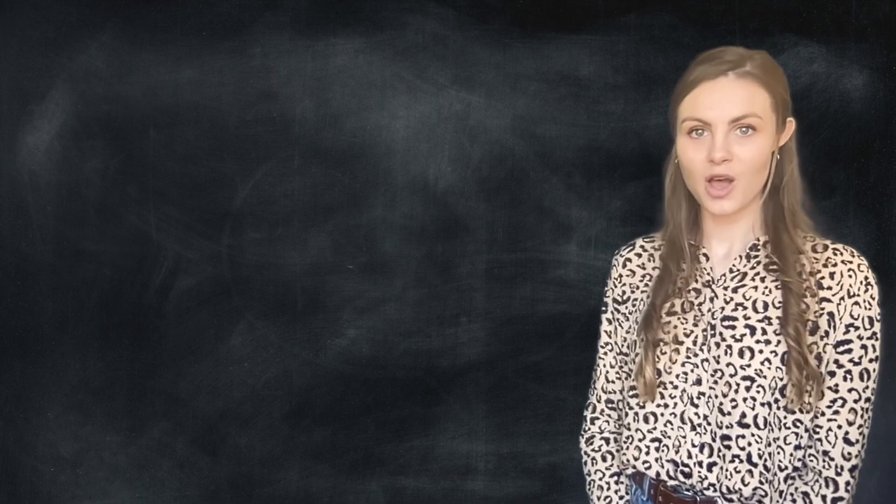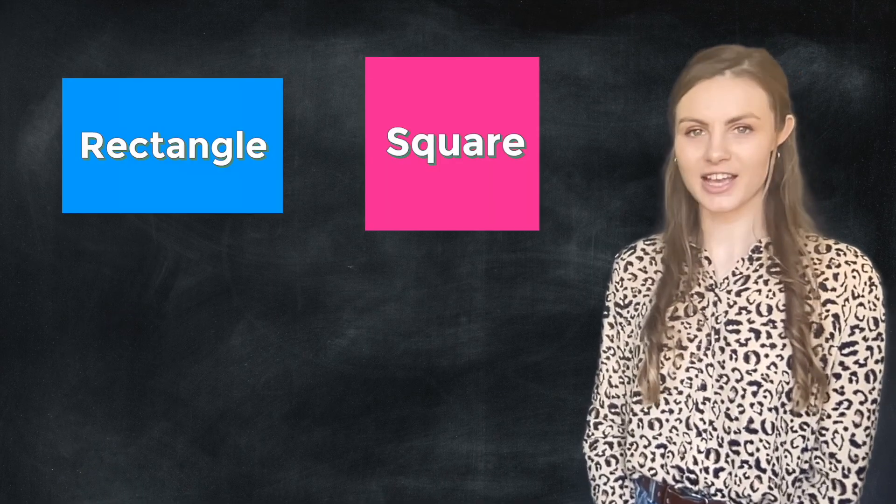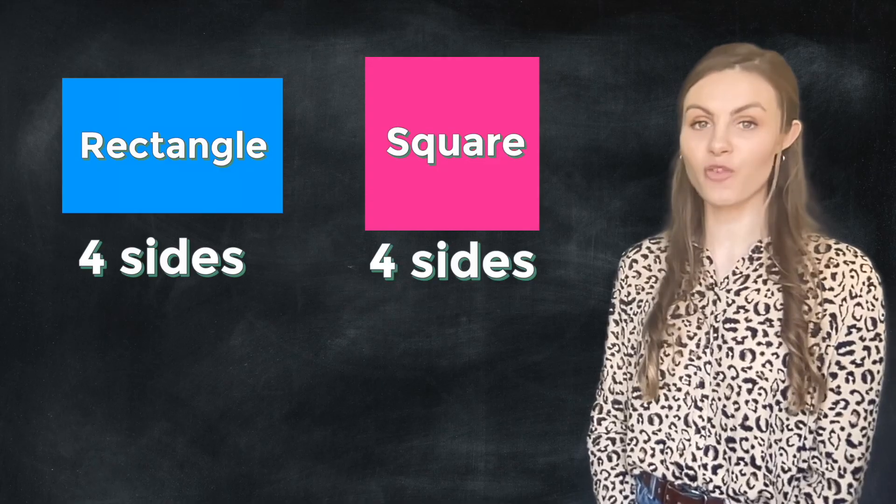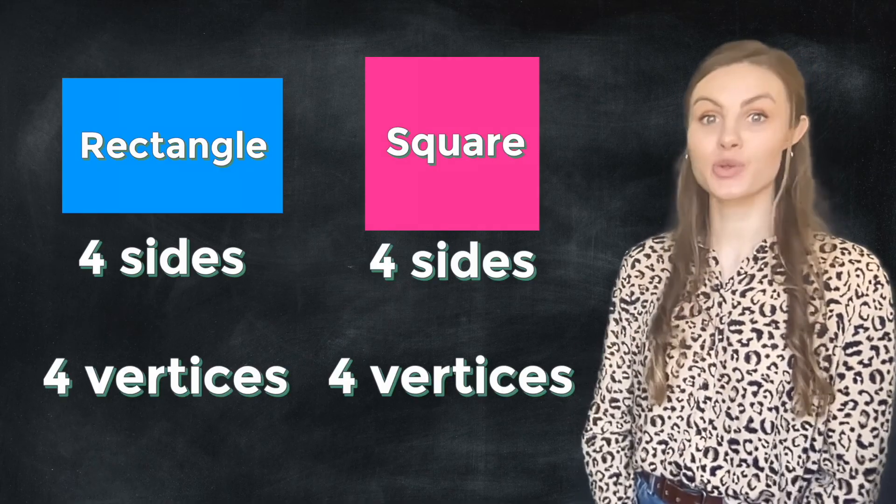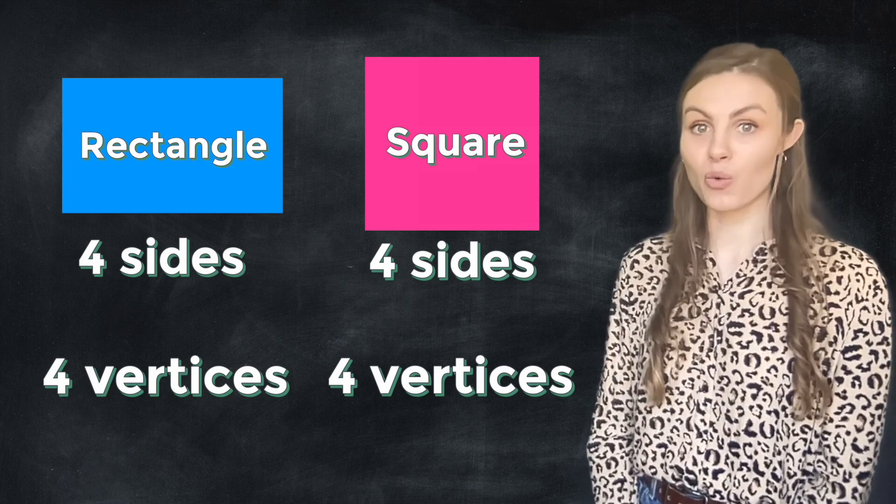So what do we know so far? Well, both a square and a rectangle have four sides and four vertices. But there's a key difference. A square has sides that are all the same length.